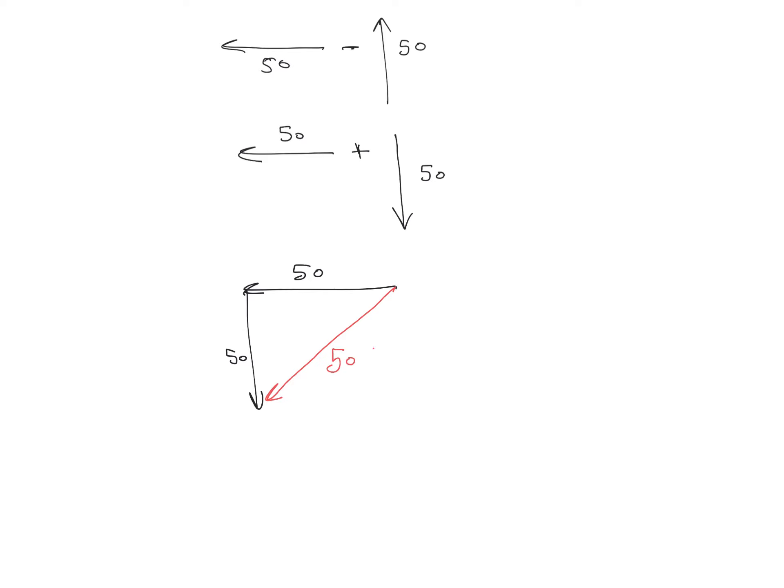So this velocity vector plus this velocity vector will get the resultant vector along this direction, and that resultant vector will have a magnitude of 50 root 2, because when two vectors having the same magnitude and angle between them is 90 degrees, the resultant is 50 root 2.